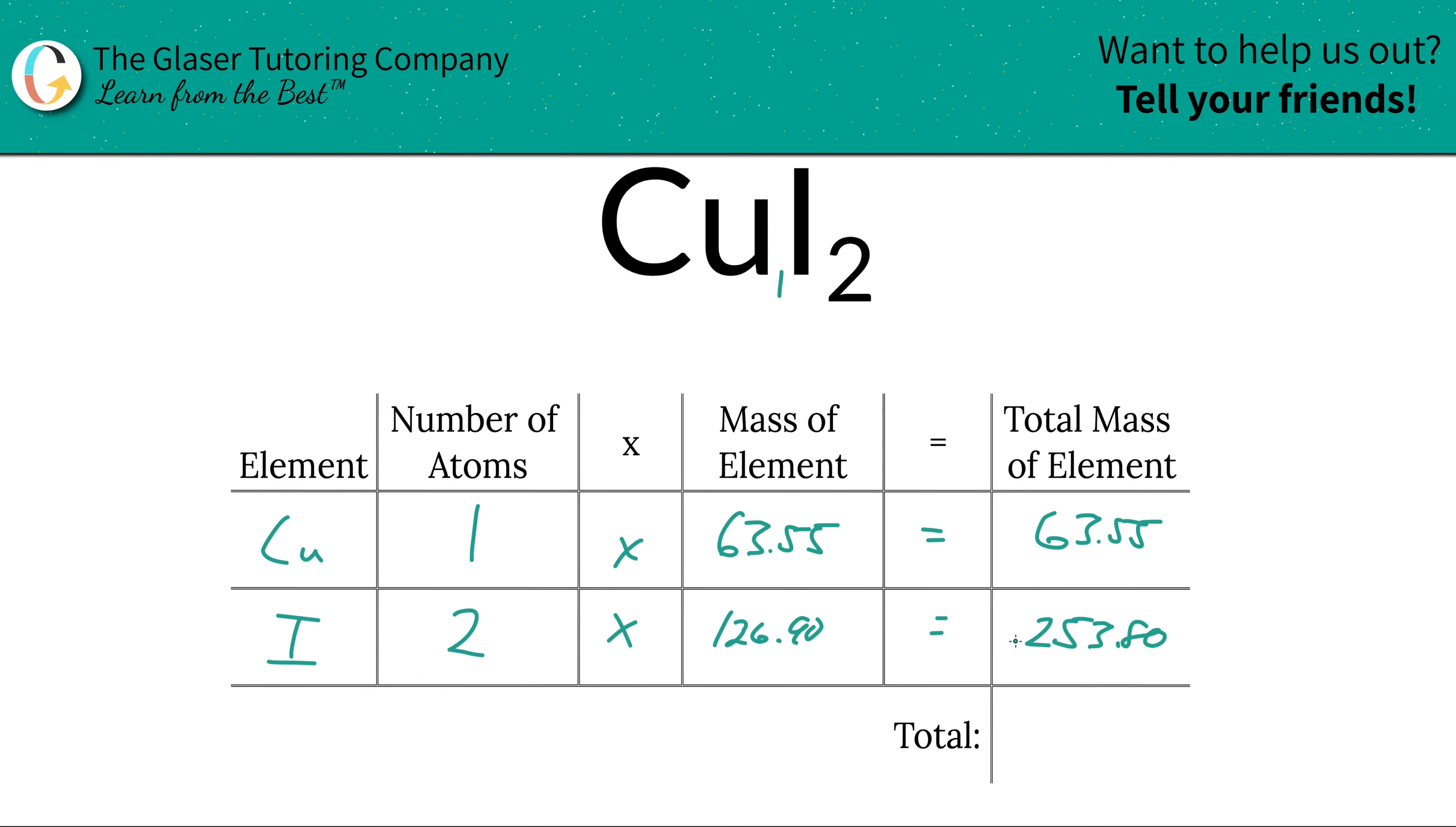And then to find the total mass of the entire compound, just add up the total mass of each individual element. Isn't that so nice and easy? So this is 317.35. And the units here are in AMU, atomic mass units. And that's because we're solving for molecular mass.